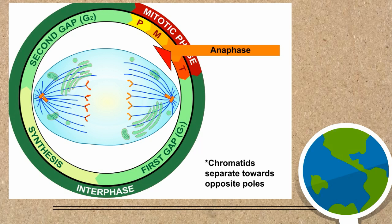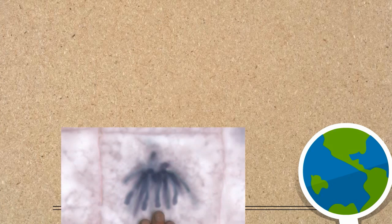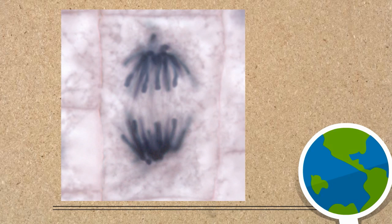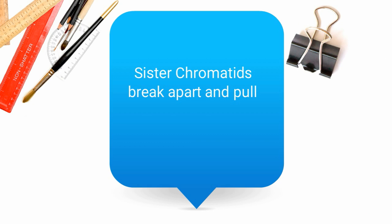Here's what this looks like. In summary, anaphase is when the sister chromatids break apart and begin to pull towards the poles.